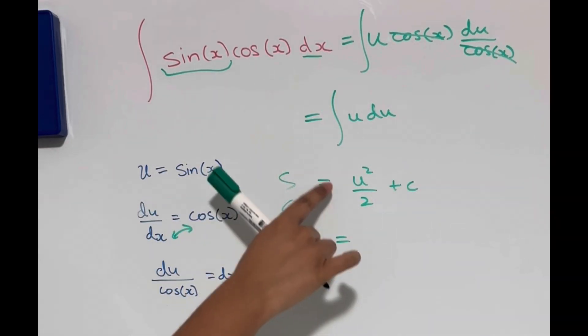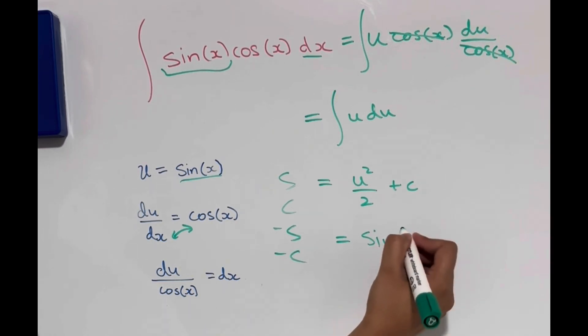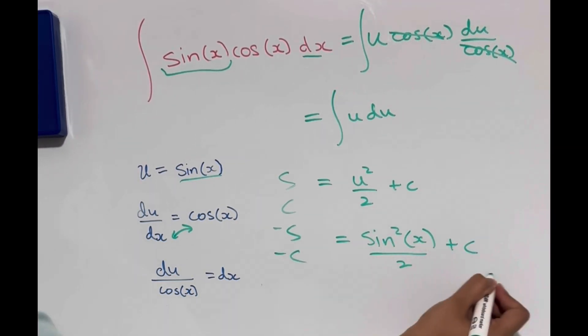And now we just have to replace u back with what it was, which is sin x. So this is going to be sin x squared divided by 2 plus c.